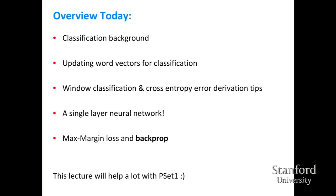Then we'll look at the first real model that is actually useful in practice — window classification. We'll clear up confusion around the cross entropy error and how it connects with the softmax. Then we'll introduce the famous neural network, our most basic Lego block that we may start to call deep — getting to Deep Learning and NLP. We'll also introduce the max margin loss and take our first steps toward backprop.